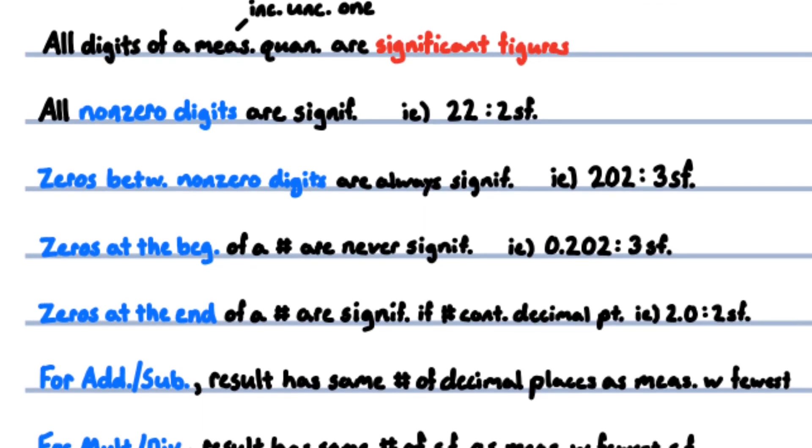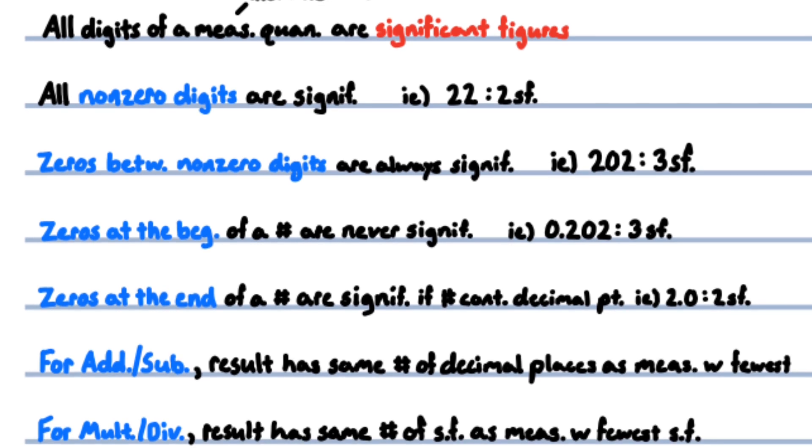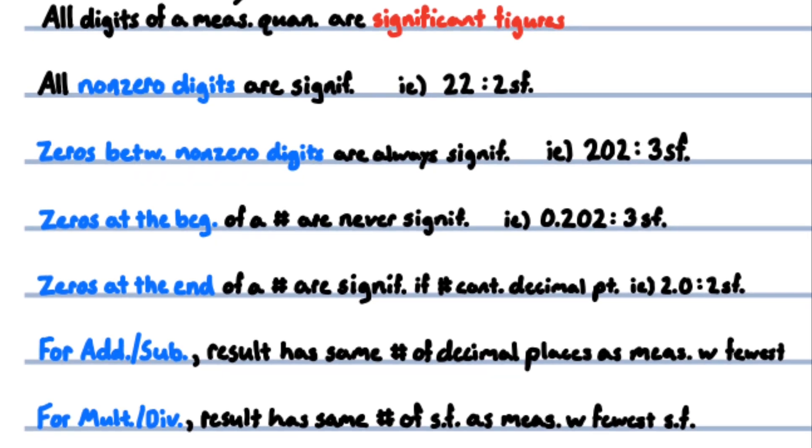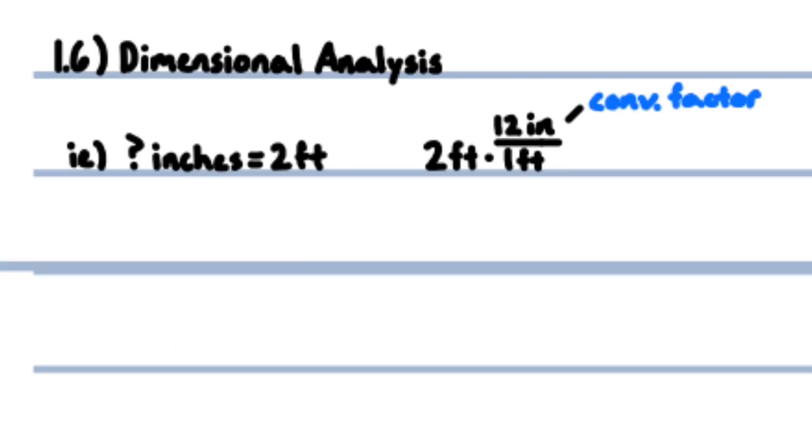Zeros at the end of a number are significant if there is a decimal point in the number. For addition and subtraction, the result has the same number of decimal places as the measurement with the fewest number of decimal places. For multiplication and division, the result has the same number of significant figures as the measurement with the fewest number of significant figures.